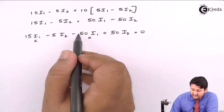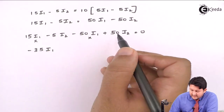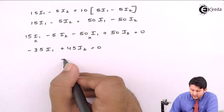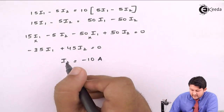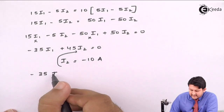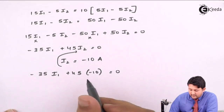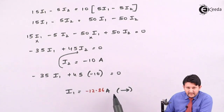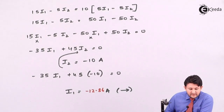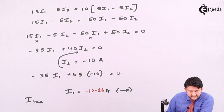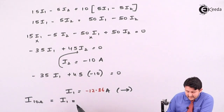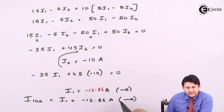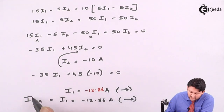Simplifying: 15I1 − 5I2 = 50I1 − 50I2. Rearranging: −35I1 + 45I2 = 0. Since I2 = −10A, substituting: −35I1 + 45(−10) = 0, giving −35I1 = 450, so I1 = −12.86A. The current across 10Ω in Case 2 is I1'' = −12.86A, direction right.